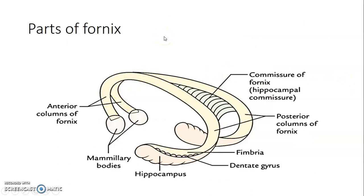Again, from the corpus callosum — corpus callosum is joined onto the fornix via the septum pellucidum. This is the fornix, and the fornix has parts. You have the anterior columns of the fornix, and then posterior columns that are joined by the commissure of the fornix.